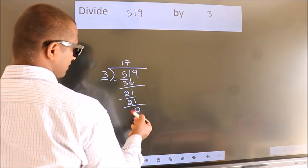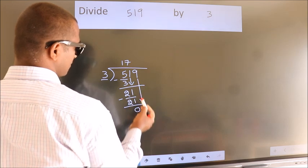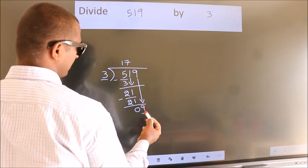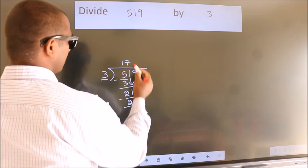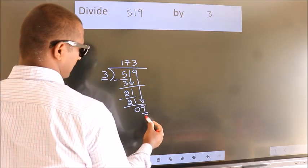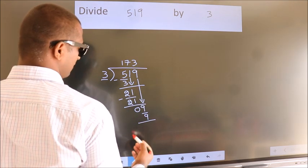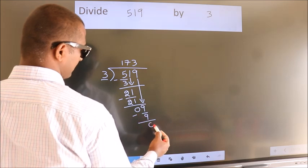After this, bring down the beside number. So, 9 down, making 9. When do we get 9? In 3 table: 3 3s 9. Now, we subtract. We get 0.